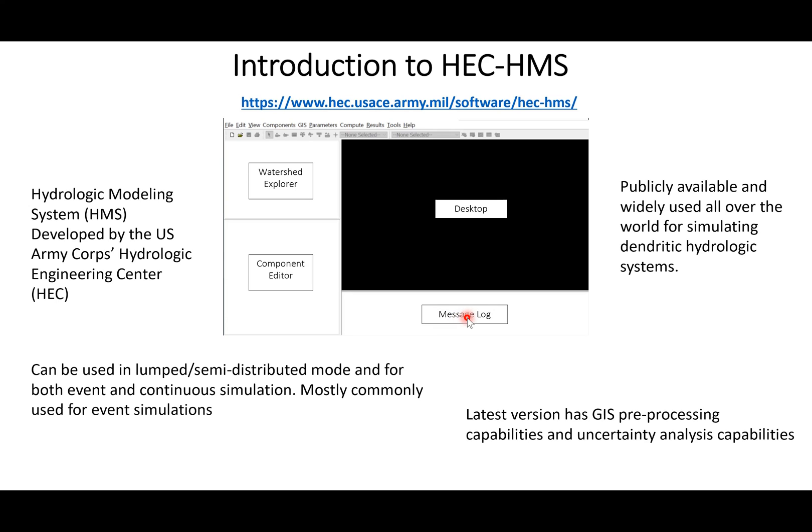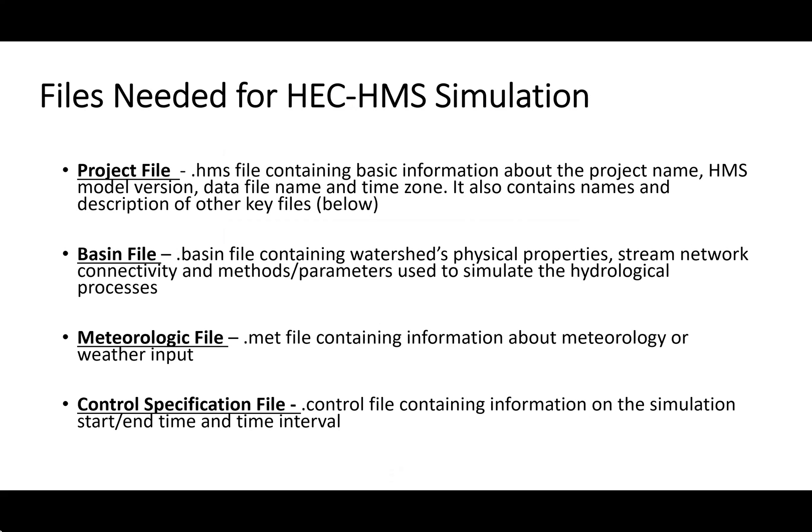To perform a HEC-HMS simulation we need four files — creating a HEC-HMS model essentially means creating these four files. The first is the project file with a .hms extension. It contains the project name, model version, data file name, time zone, and references to the three related files: the basin file, the meteorologic file, and the control specification file.